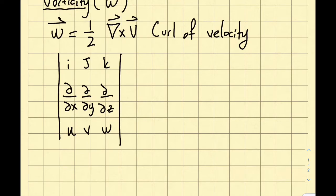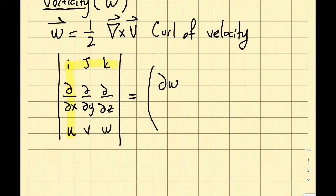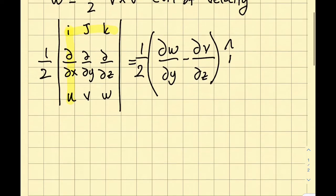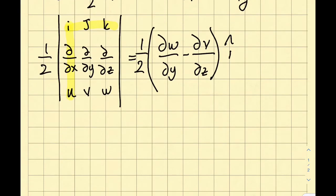Let's look at the determinant of this matrix. For the i component, I close off the first column and write: del w/del y minus del v/del z, in the i direction. Let's also include the one-half factor to stay consistent.